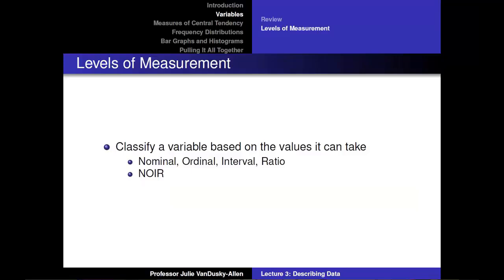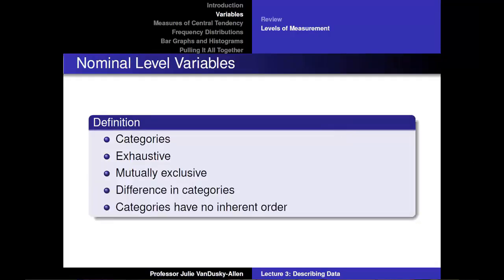In the next part of this lecture, I'm going to show you how to classify a variable based on the values the variable can take. You can classify a variable as nominal, ordinal, interval, or ratio level. Remembering the word 'noir' is an easy way to remember these four terms, as the letters are the first letters of those four words. Noir means black in French. Nominal-level variables divide subjects into categories that are exhaustive and mutually exclusive, and while there is a numerical difference between categories, there is no inherent order in the data — one category is not greater than another.